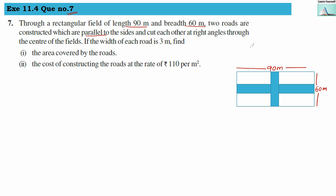Two roads are constructed which are parallel to the sides and cut each other at right angle. Here they are making a right angle and meeting at a center. These roads are three meters wide — this is three meters and this is also three meters.